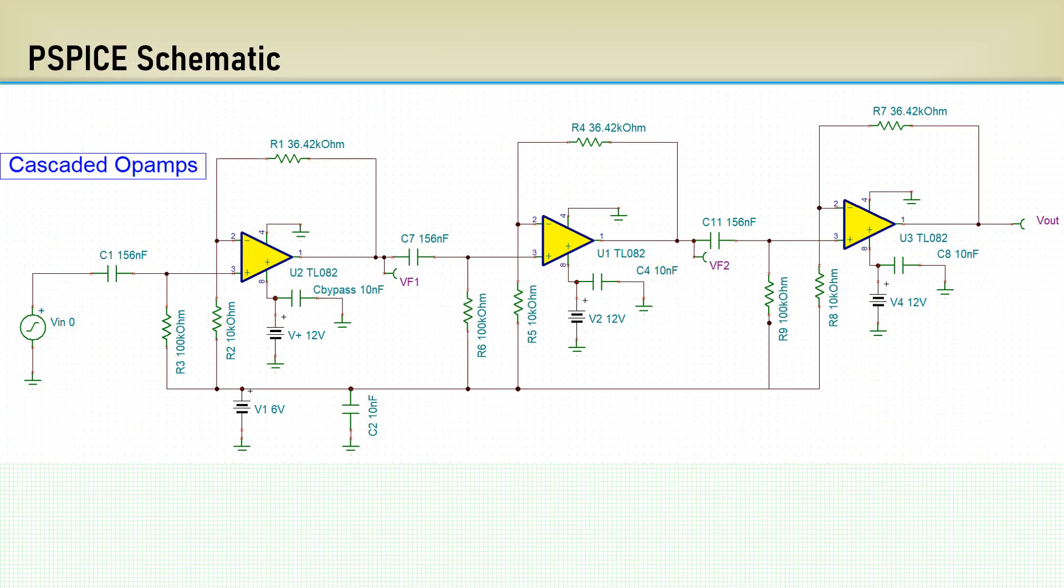Here is the PSPICE schematic for the three non-inverting stages using the TL082 op-amps. They are capacitively coupled with lower corners set at 10.2 Hz. There is no higher frequency filtering. It is dominated by the gain bandwidth of the op-amps.